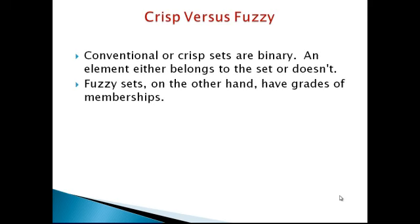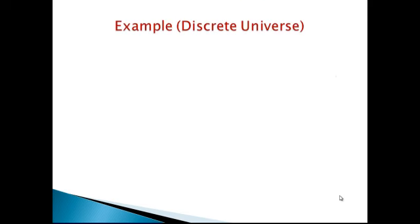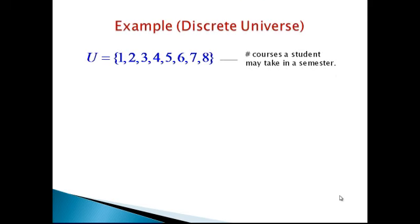The difference between a crisp set and a fuzzy set is that conventional crisp sets are binary — the values are either 0 or 1, that is yes or no, and an element either belongs to the set or does not. Fuzzy sets, on the other hand, have grades of membership. The membership values lie in the closed interval [0, 1].